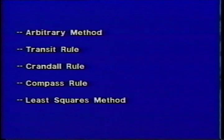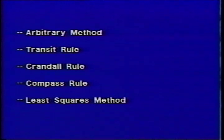The various types of traverse adjustments are the arbitrary method, the transit rule method, the Crandall rule method, the compass rule, and the least squares method.